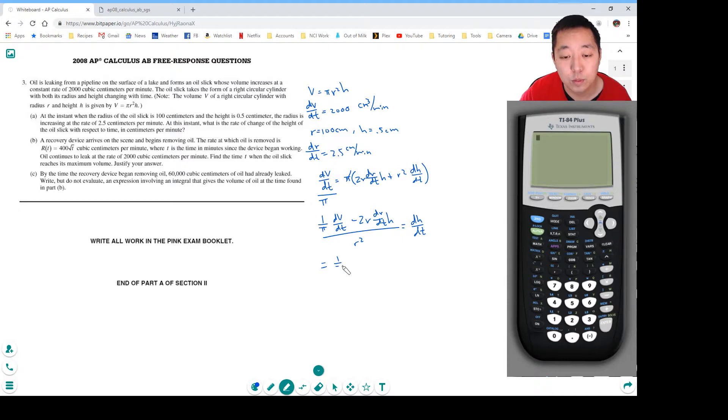So now let's just plug it in: 1 over pi times 2,000 minus 2 times R, which is 100, times dR/dt, which is 2.5, times H, which is 0.5, over R squared, which is 100 squared. So 2,000 divided by pi minus 2 times 100 times 2.5 times 0.5 divided by 100 squared equals 0.0387 centimeters per minute.